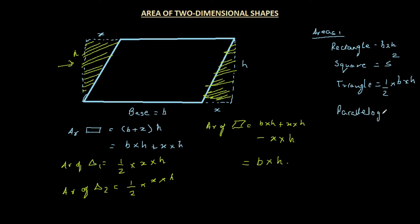We've also got other shapes like a rhombus, a kite, and a trapezium — click on the video appearing here to find out how to calculate their areas. Don't forget to subscribe by clicking on my photograph and smash the like button. As far as the area of a rectangle, square, triangle, and parallelogram is concerned — congratulations, you have nailed it. Take care, God bless, I'll see you in the next video.